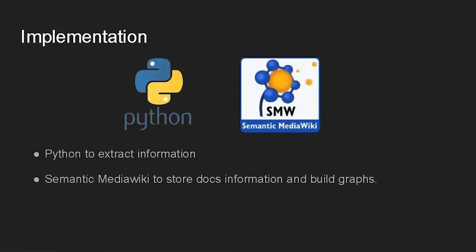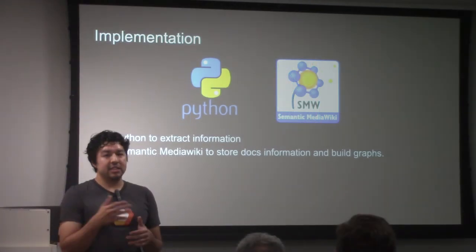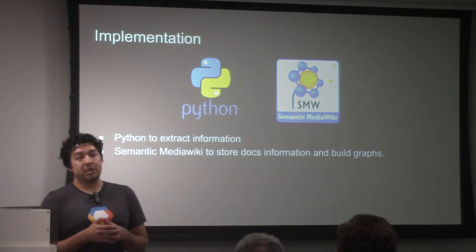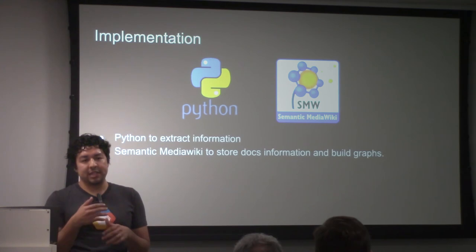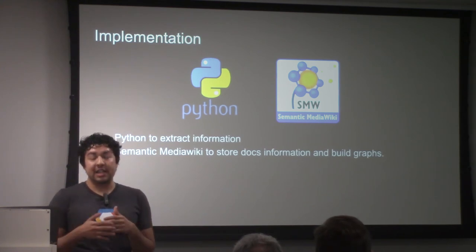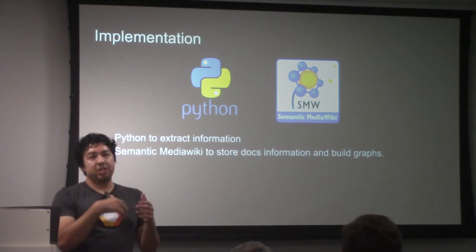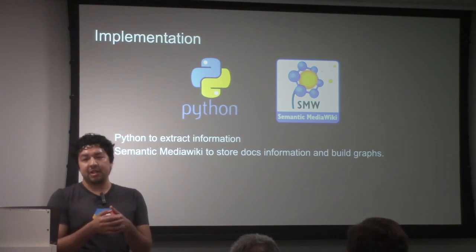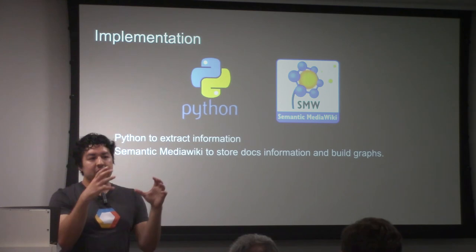I built this using Python and Semantic MediaWiki. I use Python to extract the information from the documentation — I feed in a list of pages I'm interested in, run a script that scrapes the pages for HTML inline links, and then that script saves the information in Semantic MediaWiki. Semantic MediaWiki is based on the same platform that powers Wikipedia, but adds semantic web features so you can define and analyze relationships between pages. I then used a plugin for Semantic MediaWiki that built those graphs very easily.